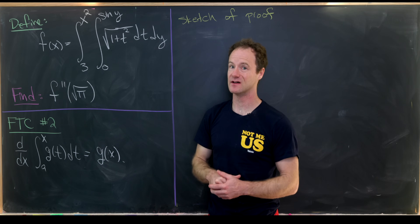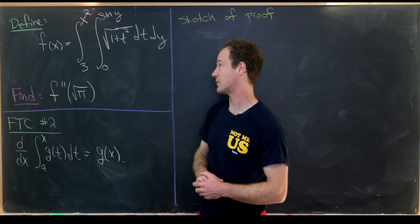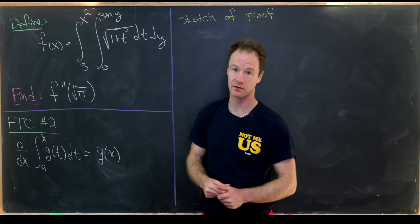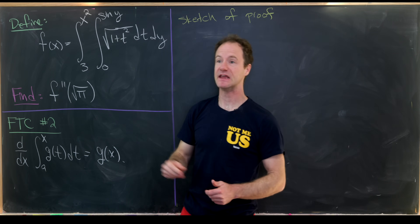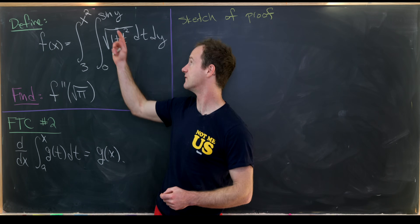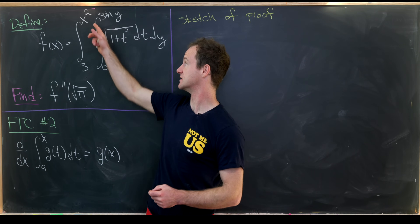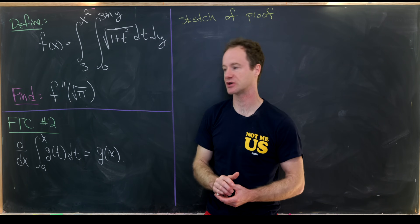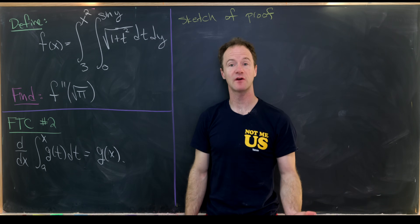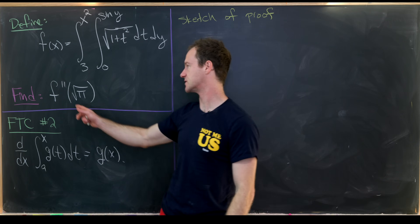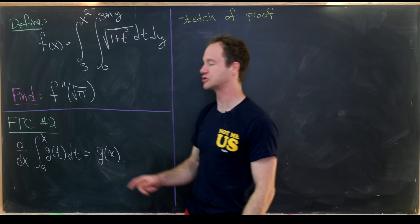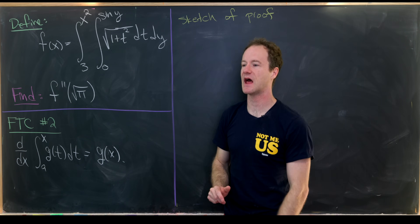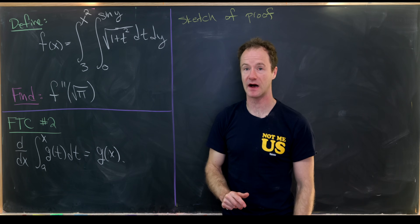So already a lot is happening. We have an integral within an integral, and each of these integrals has a function as the upper bound of integration. Our final goal is to find the second derivative of this function evaluated at negative pi.